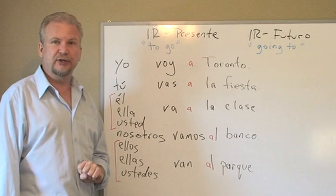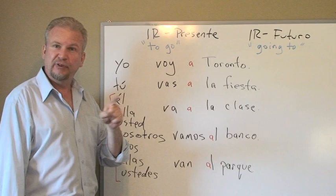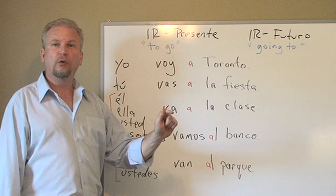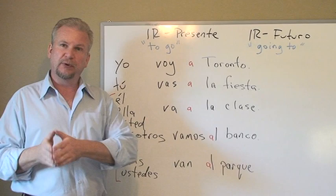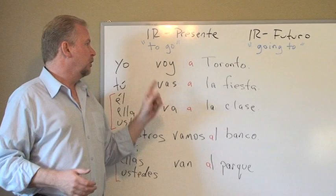The conjugations are very different — they don't look anything like the verb itself. To say 'I go' in Spanish: yo voy. Remember, the V sounds like a B. Yo voy a Toronto — I go to Toronto. Most of the time when we use the verb 'to go,' we add the preposition 'a' afterwards, which means 'to.' We don't say 'I go Toronto'; we say 'I go to Toronto.'